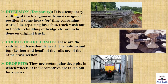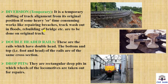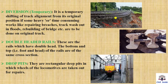Next, divergence. It is a temporary shifting of track alignment from its original position when some heavier, time-consuming works like repairing breaches, track washout in floods, or rebuilding of breaches are to be done on the original track. A temporary alternate track is laid, and we call this diversion or divergence.